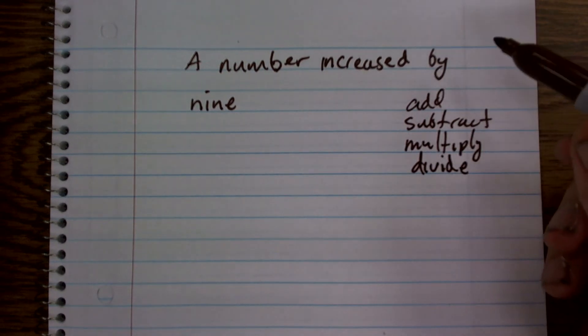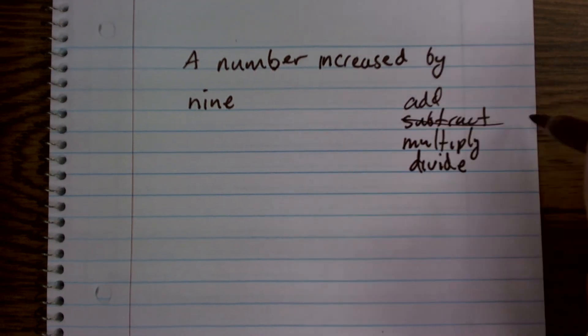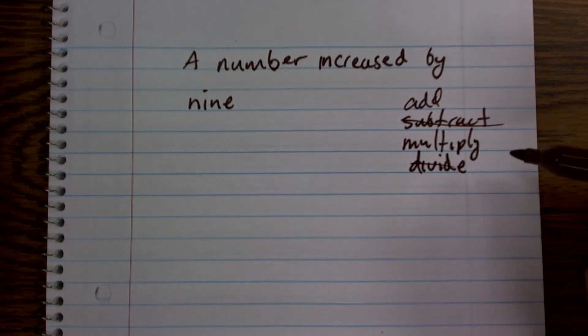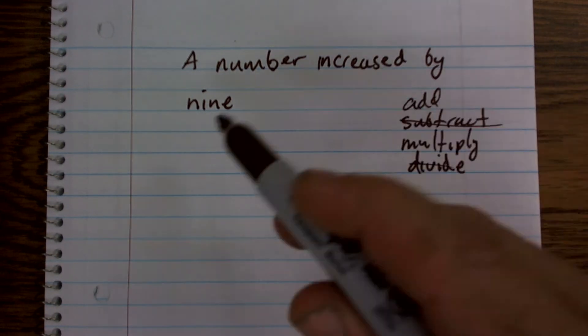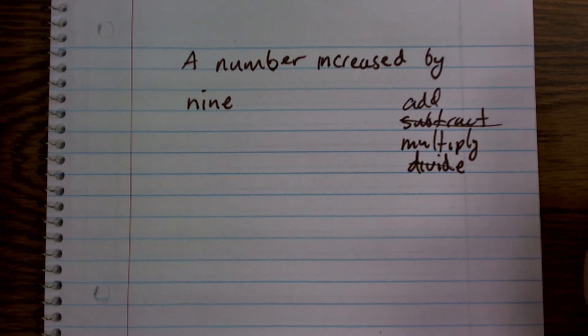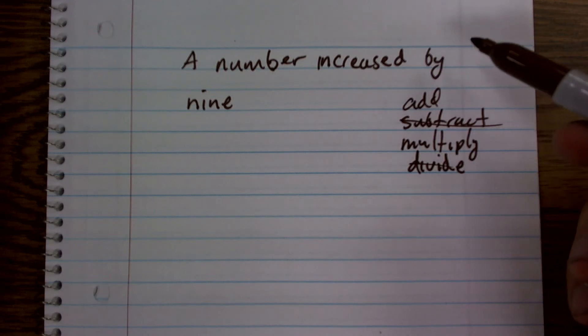Well, if it's said it's increased by, I know I'm not going to be subtracting or dividing, right? Because those aren't going to make my number bigger. However, when it's said, because it's increased by a positive number 9, but then it just says increase by 9.